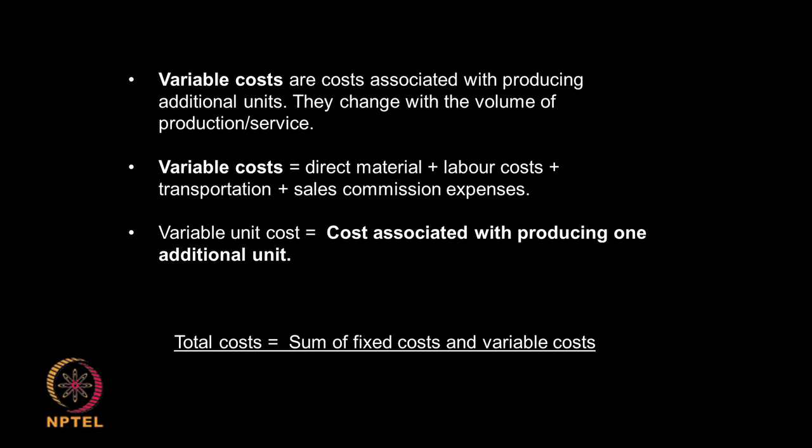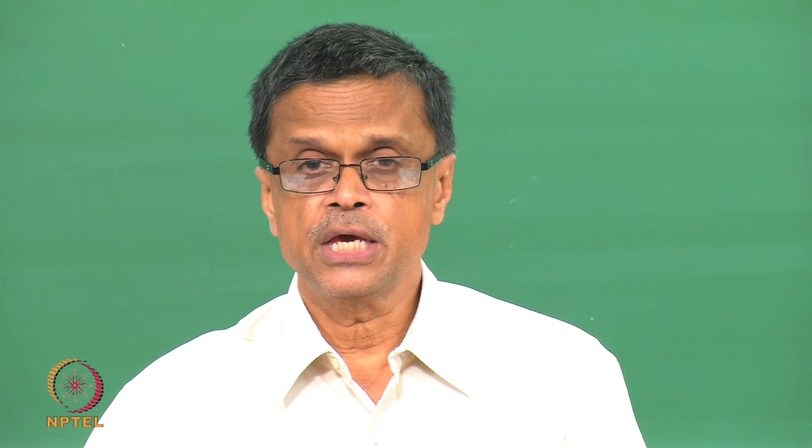The raw materials, consumables, electricity, labor cost, transportation, sales, commissioning — all these will be varying depending upon how much I am producing. So the total cost is sum of both. If I want to make a profit, I need to consider the total cost for manufacturing a certain amount of my product. That you will add on top of it other costs like interest rates, depreciation and so on, and then you calculate your selling price of your product.